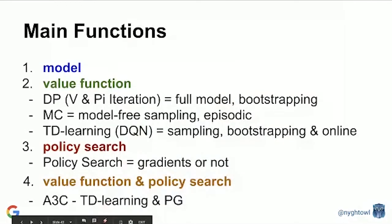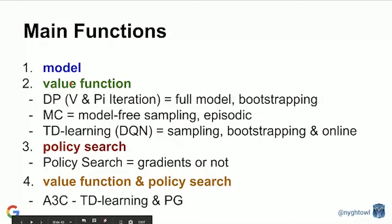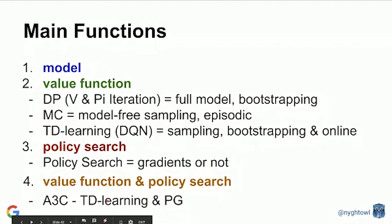Those are the key functions from a reinforcement learning perspective. You may or may not know your environment, you'll explore it and may or may not model it. This influences the algorithms you'll define. You have the value function — dynamic programming, Monte Carlo, or temporal difference learning — to find optimal policies. You typically will not do exhaustive search unless your space is really small. Then you might model your policy directly, doing policy search with or without gradients. And of course, why not just put the two together — that's your actor-critic model.